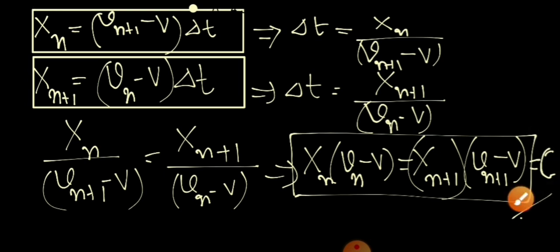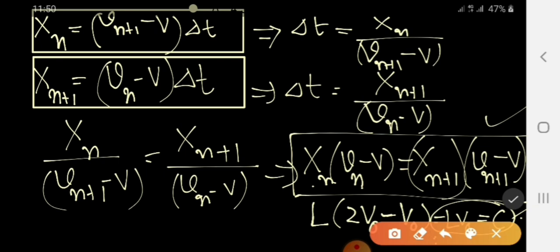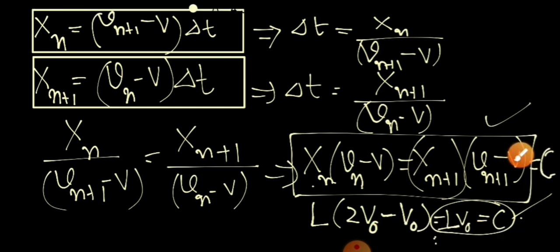At the first collision: xₙ = L (initial distance from wall), the ball velocity becomes 2V₀, and the block velocity remains V₀. So the constant C = L·(2V₀ − V₀) = L·V₀.